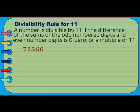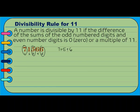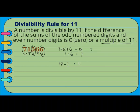Let's have one last example: 71,566, which has 5 digits. The sum of the odd-numbered digits (1st, 3rd, 5th): 7 plus 5 plus 6. 7 plus 5 is 12, plus 6 is 18. The sum of the even-numbered digits: 1 plus 6 equals 7. Subtract: 18 minus 7 is 11. Since 11 is a multiple of 11, 71,566 is divisible by 11.